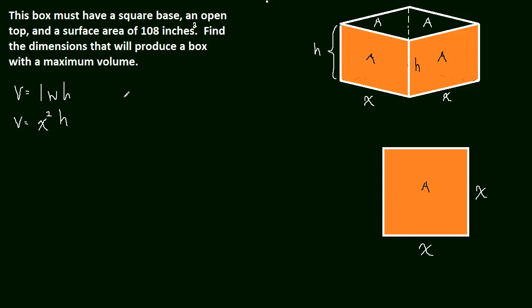So how can we get h in terms of x so that this whole thing will be in one variable? Well, we can notice that the total surface area must be equal to 108 inches squared. The surface area is pretty easy to calculate because we know that the area of each side is going to be just h times x. Each side is the same, h times x. So we have four sides with h times x.